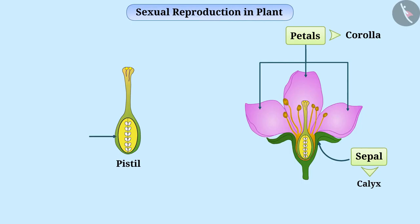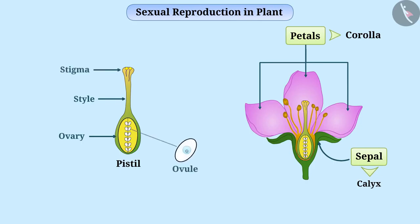The swollen bottom part is the ovary. The middle elongated part is the style, and the terminal part, which may be sticky, is the stigma. The ovary contains ovules, and each ovule has one egg cell. The egg cell is the female gamete of the plant.